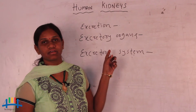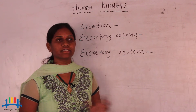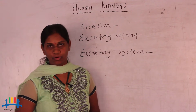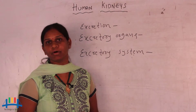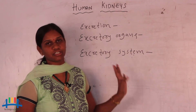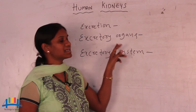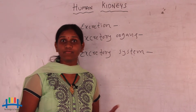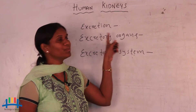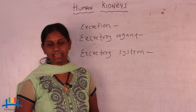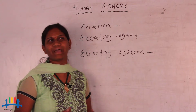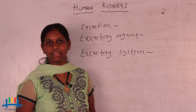First, excretion. Kidneys are related to the excretion process. Excretion means the unwanted excess products are sent out from our body through certain organs — that process is called excretion. The organs that help with this process are called excretory organs. Human kidneys act as the primary excretory organ, performing the maximum amount of this process.